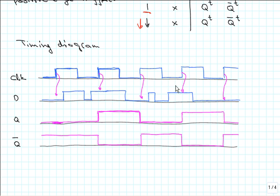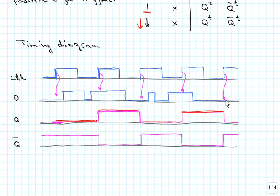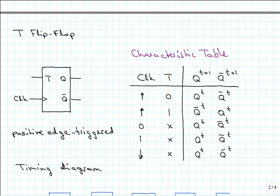The output is frozen between positive clock edges and cannot change during those intervals. So we have a positive D equal to one here, and at the positive edge that will turn into one at the Q output. Then here D is again zero, which makes the Q output zero. The Q-not output is simply the inverted values of the Q output.